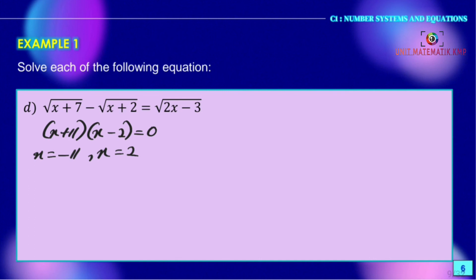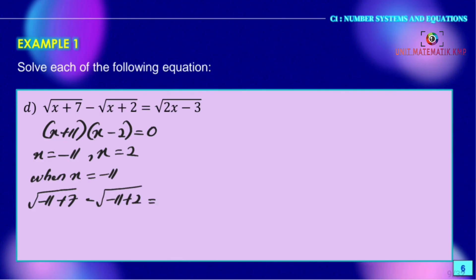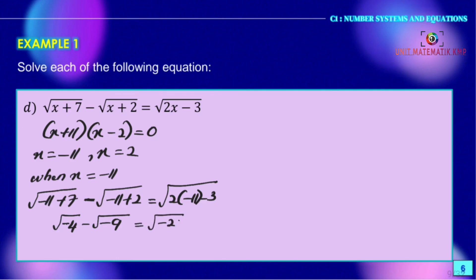We check the roots with the original equation. When x = −11: √(−11 + 7) = √(−4), which is undefined since the value under the square root is negative. Therefore x ≠ −11.